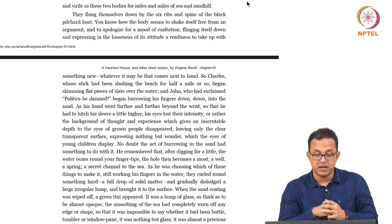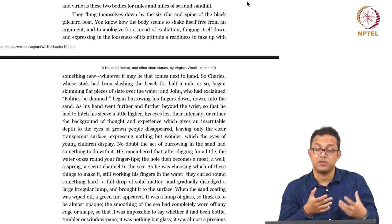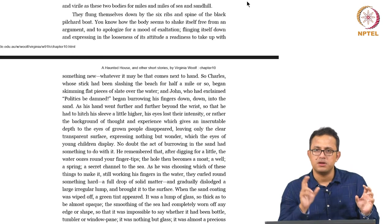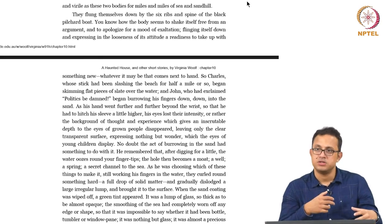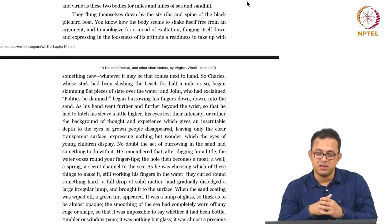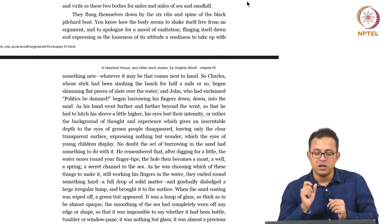'As he was choosing which of these things to make, still working his fingers in the water, they curled around something hard — a full drop of solid matter.' This is the first solid object which comes in the story — the first touch he has with a solid object which creates and develops the fetish he subsequently has. Note the interesting description: 'a full drop of solid matter.' Normally when we talk about solid matter, we do not use the word drop — drop is liquidy in quality. But Woolf is describing a very complex tactile experience, because the fingers are dipping in sand which is part of the sea, waters curled around the sand and the fingers, and amidst all that curling water he suddenly touches something solid. 'And gradually dislodged a large irregular lump and brought it to the surface.'